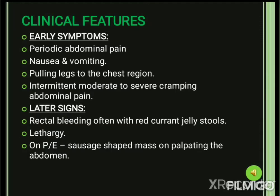Now the clinical features of intussusception in children, classified into early symptoms and later signs. In early symptoms, the child presents with periodic abdominal pain on and off, nausea and vomiting, pulling the legs to the chest to comfort from pain, and intermittent moderate to severe cramping abdominal pain. Later signs include rectal bleeding with red currant jelly stools — because of ischemia the mucus layer sloughs off and is excreted as red currant jelly stools containing mucosal slough, blood, and mucus.